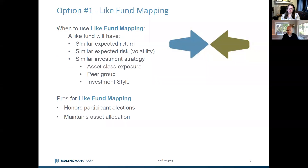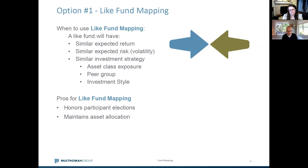Now that we've talked about the why, let's talk about the how — the methods for fund mapping. There are three common types of fund mapping, and we do see them used in combination with one another depending on the amount of change being undertaken. The first and most common method used by plan sponsors is like fund mapping — mapping from fund A to fund B where the removed fund is substantially similar to the new fund.